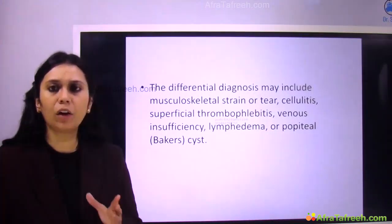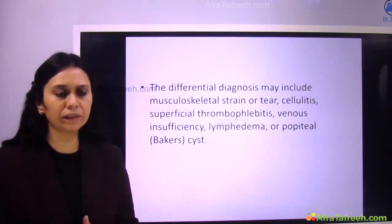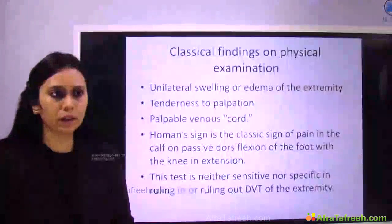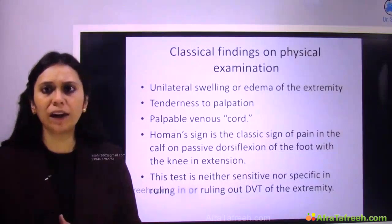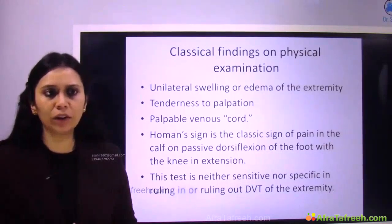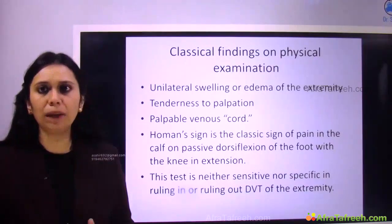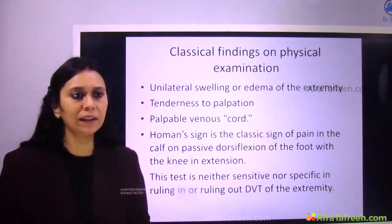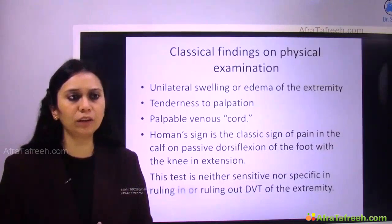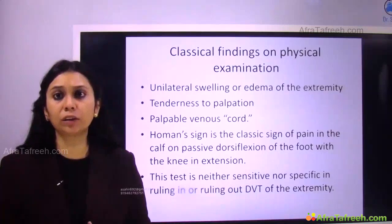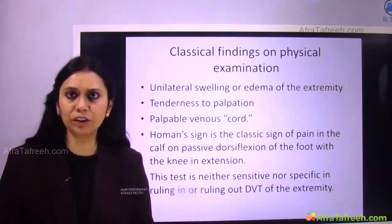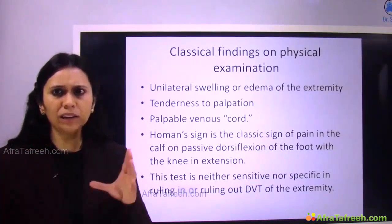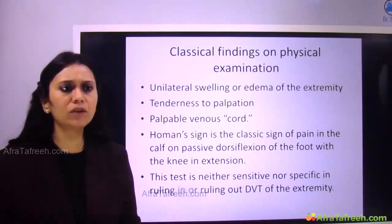The classical findings on physical examination of DVT are: unilateral swelling or edema of the extremity, tenderness on palpation, and a palpable venous cord. Homan's sign is a classical sign — pain in the calf on passive dorsiflexion of the foot with the knee in extension. This sign is neither sensitive nor specific for DVT but is historically important.